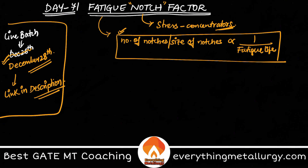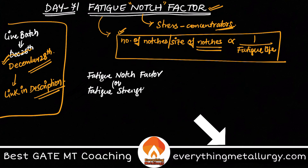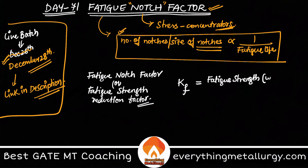The fatigue notch factor is a ratio explaining the effect of notches present in a body. It is also called the fatigue strength reduction factor, because in the presence of notches the fatigue strength decreases. It is denoted as Kf, where Kf equals the fatigue strength of a perfect (unnotched) body — one with no defects or notches — divided by the fatigue strength of a notched body.